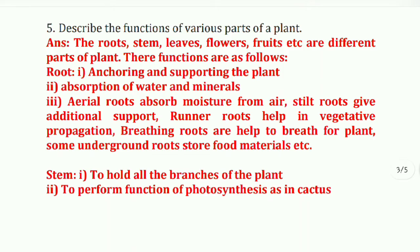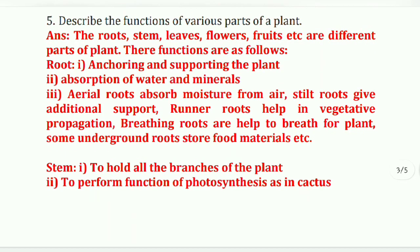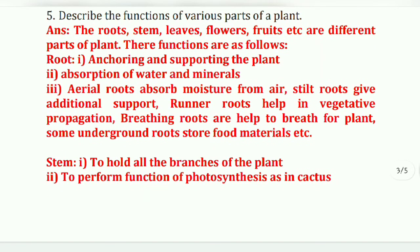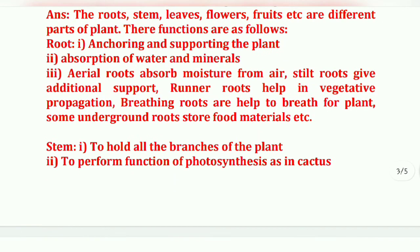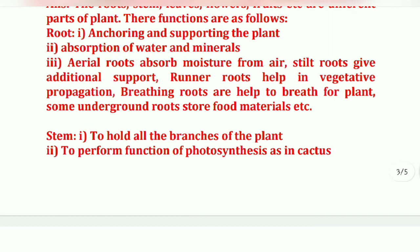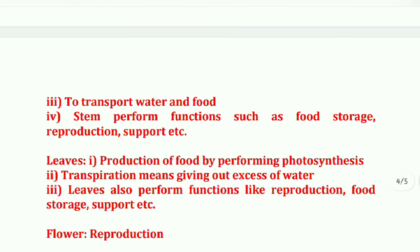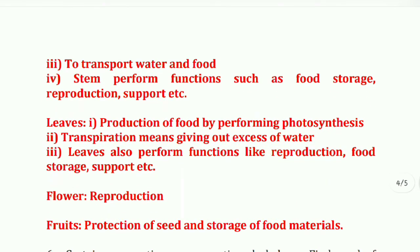Aerial roots absorb moisture from air, stilt roots give additional support, runner roots help in vegetative propagation, and breathing roots help the plant to breathe. Some underground roots store food material. Next, stem: to hold all branches of the plant, to perform photosynthesis as in cactus, and to transport water and food.